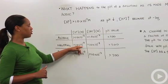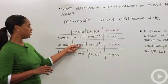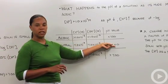If it's neutral, basically the concentration of both protons and hydroxide ions are equal, right? They balance each other out. So they're both at 1.0 times 10 to the minus 7th, and your pH value is equal to 7.